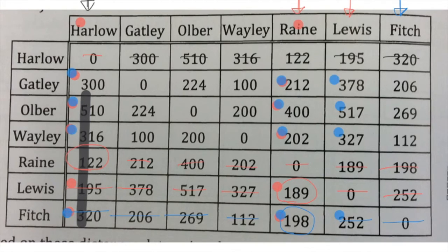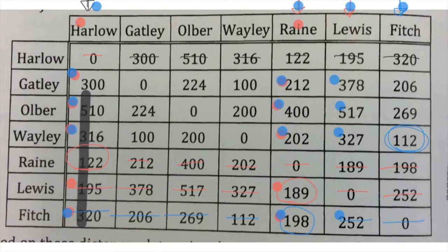So now we're looking in this one, this one, this one, and this one. We look down all those columns and find the smallest number that's not circled or crossed out. 112. That one is Whaley. So we're now adding this town to the network. We go and cross out all of those — 206.